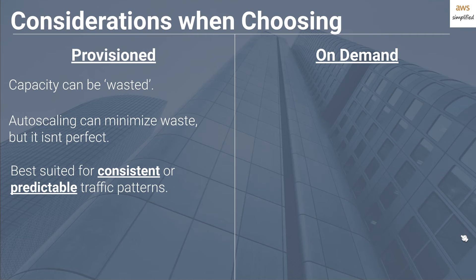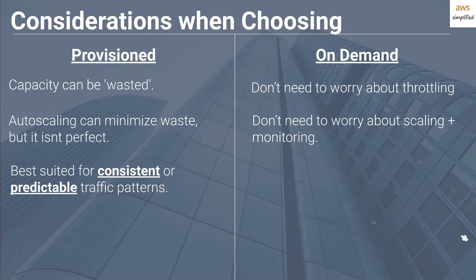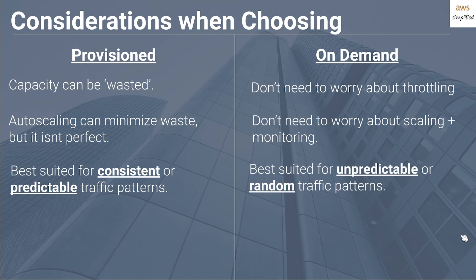One of the most convenient features of on-demand is that you don't need to worry about throttling. DynamoDB automatically scales your table up and down behind the scenes to minimize the likelihood of throttling — this doesn't mean it's impossible, just much less likely. My second favorite feature of on-demand is that you don't need to worry about scaling and, to a certain extent, monitoring. This is very convenient if you want to focus on your business problem and not the underlying technology. So in summary, on-demand is best suited for unpredictable or random traffic patterns, since it's wasteful to use provisioned when your access pattern is random and you can't really choose the right value for your provisioned limits.